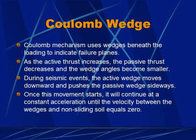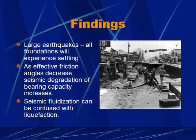During seismic events, the active wedge moves downward, pushing the passive wedge sideways. Once this movement starts, it will continue at a constant acceleration until the velocity between the wedges and the non-sliding soil equals zero. Research found that for large earthquakes, all foundations will experience settling. As effective friction angles decrease and seismic degradation of bearing capacity increases, large settlements due to seismic fluidization can be mistaken for liquefaction. The settlement occurs in a similar fashion regardless of the walls and foundation supports, and is calculated by integrating the relative velocity along the slip surface for the seismic pulse. When a design is controlled by displacement, it is preferable to start with the allowable maximum settlement and work backwards to determine the required factor of safety. Using the Coulomb mechanism provides a simplified method for developing seismic bearing capacity safety factors and determining the amount of settlement a foundation will experience during a seismic event.